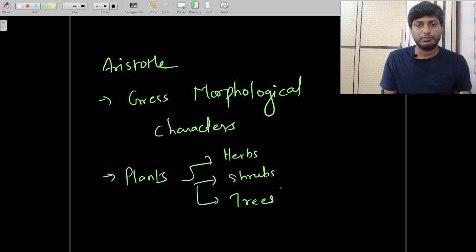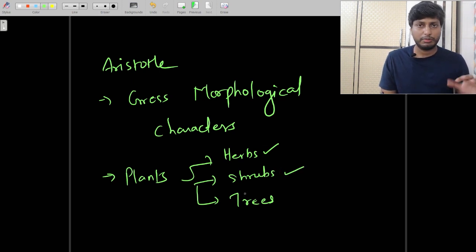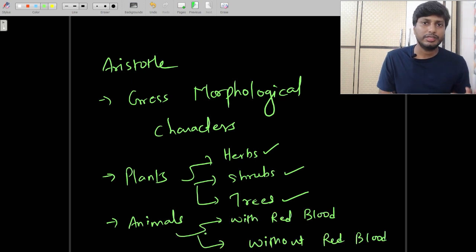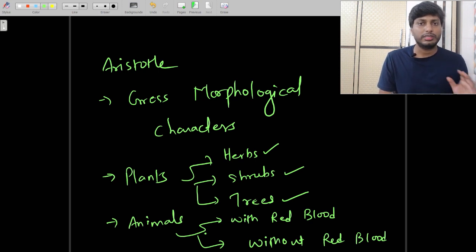Plants which were very small were categorized as herbs. Plants of medium height were classified as shrubs, and plants above about 5 feet were classified as trees. In the case of animals, Aristotle divided them into two major groups: those with red blood and those without red blood. This was a very ancient classification system, and from it we are not able to study organisms like bacteria or fungi, so this classification system was not later accepted.